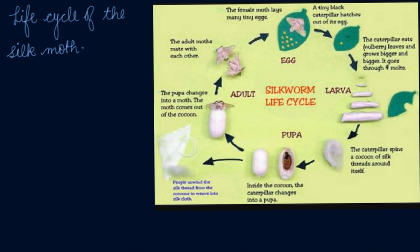After eating the mulberry leaves and growing on them, they leave the leaves and become larvae. This is the silkworm, or the larvae stage. The silkworm feeds on the leaves and grows.